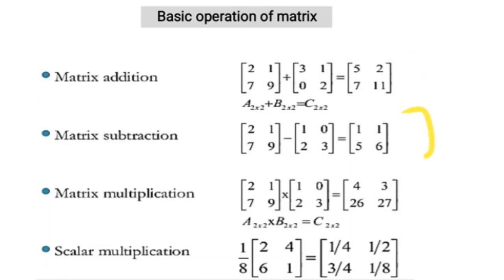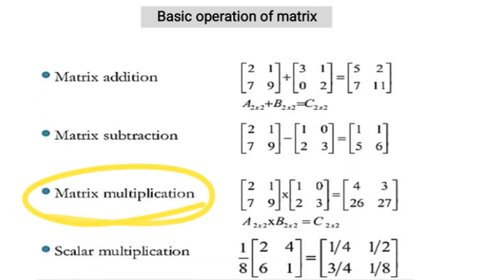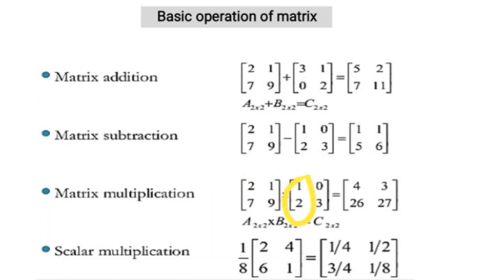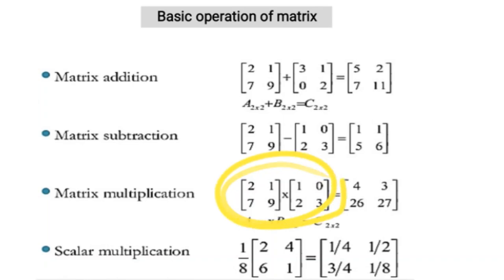Now let's see matrix multiplication. As I mentioned, there is one condition: the number of columns of the first matrix must equal the number of rows of the second matrix. Here the first matrix has 2 columns and the second matrix has 2 rows, so they can be multiplied. Select the first row of the first matrix and multiply with the first column: 2×1 plus 1×2 equals 4.